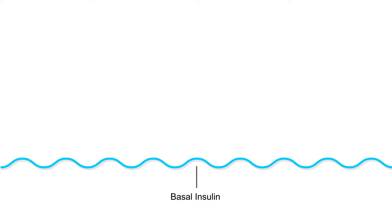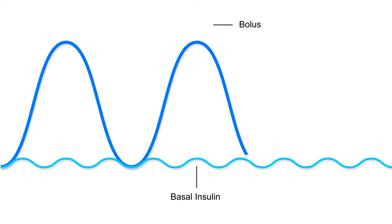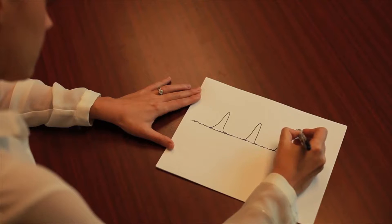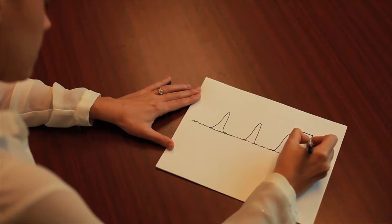Basal insulin is just meant to keep your blood sugars nice and stable and prevent them from rising any further. And then under natural conditions, any time that we would eat, our pancreas would secrete these bursts of insulin to cover our meals. This is the bolus component of the multiple daily injection regimen, designed to cover the meal. Most people, if they have three meals a day, would have three corresponding spikes of bolus insulin.